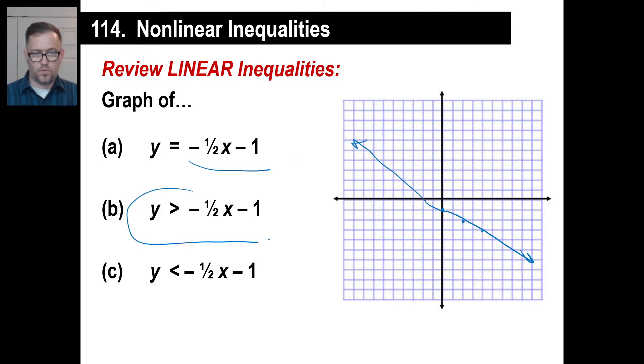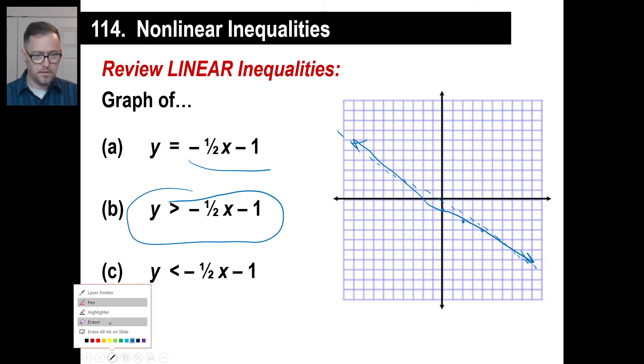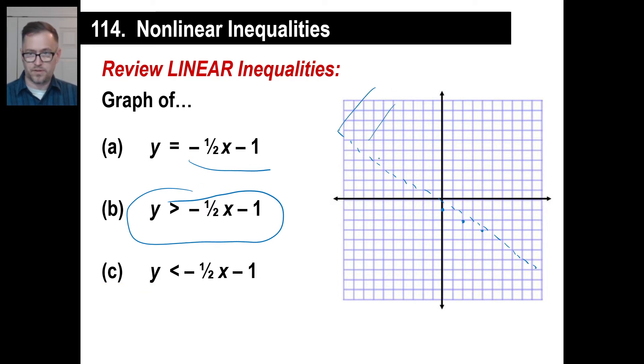Now if we're doing this one where y is greater than negative half x minus one, we indicate that by not including the line itself. It's like the filled-in line when you're graphing on a number line. We wouldn't do that this time, it would just be dashes across here. If it's greater than that, it's going to be everything above this. Conversely, if we're graphing this one with less than, everything would be down here.